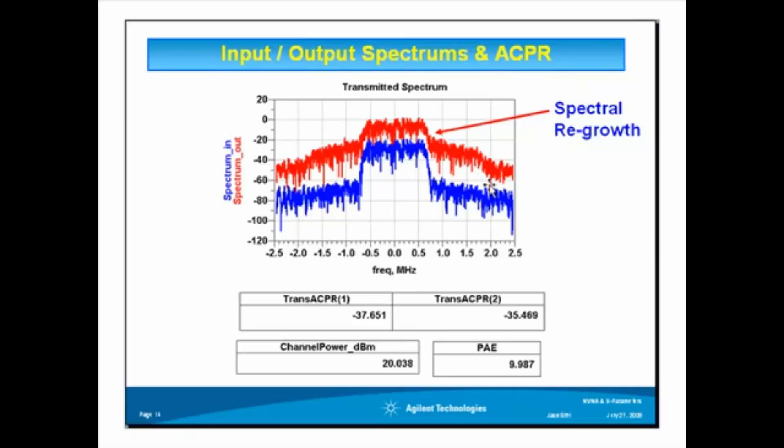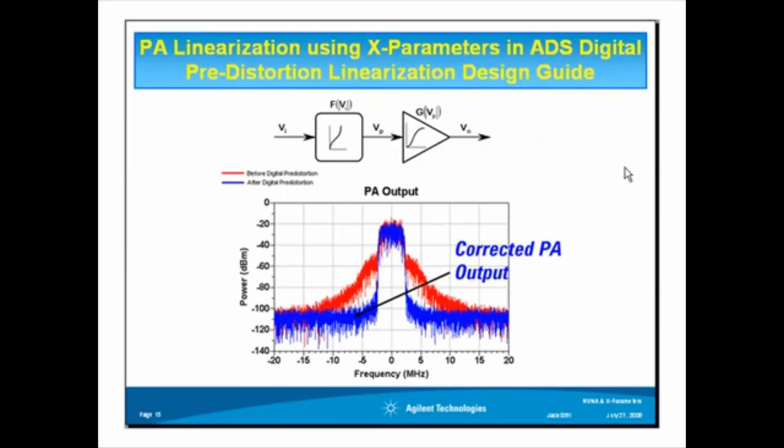This is an example of how the digital pre-distortion linearization design guide in ADS was used to linearize a power amplifier that was measured and represented by its X-parameters model file and PHD model.